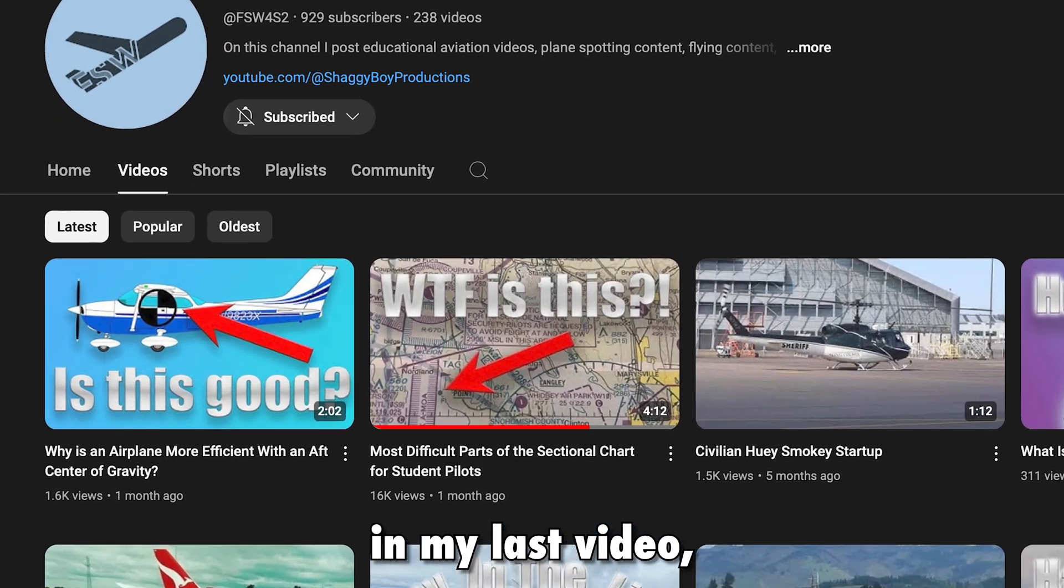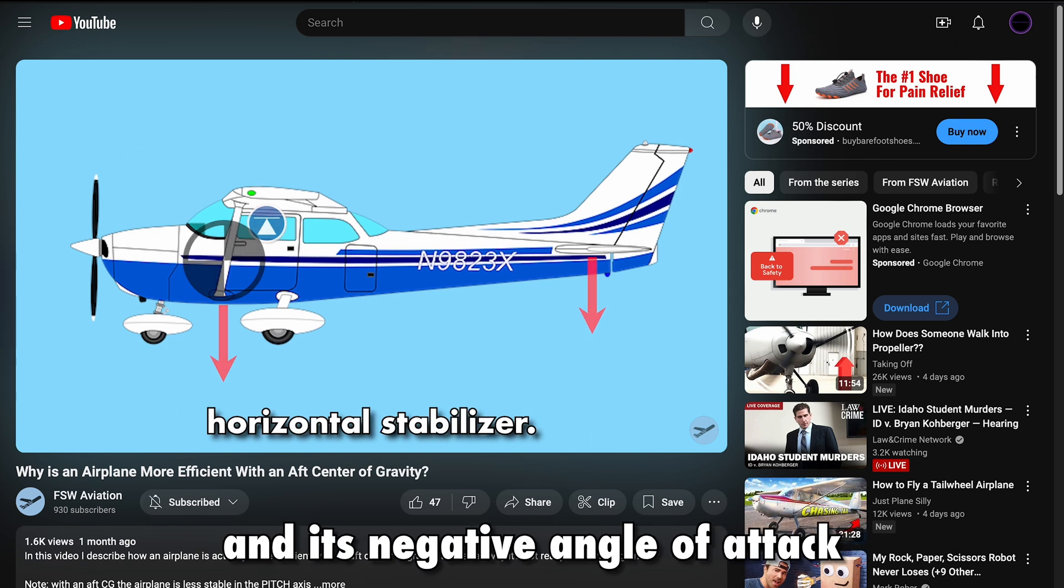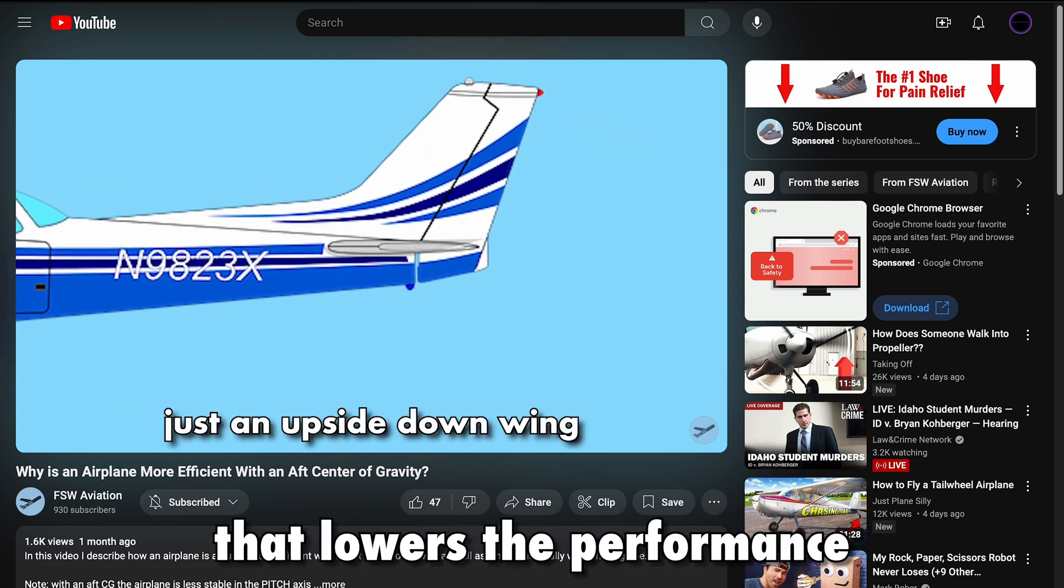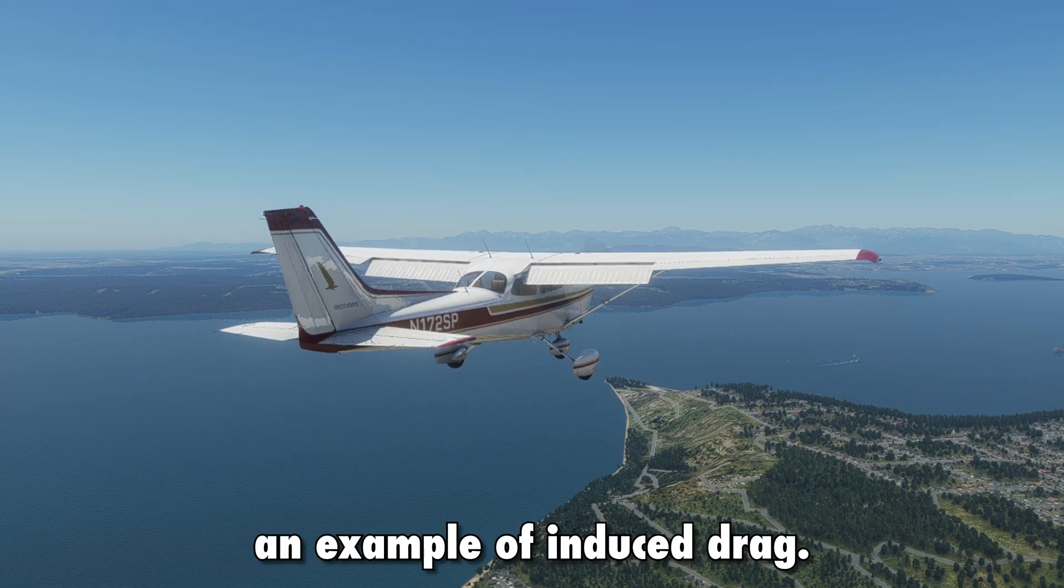For example, in my last video, I discussed how downward lift from the horizontal stabilizer and its negative angle of attack creates induced drag that lowers the performance of the airplane. Flaps are also an example of induced drag.